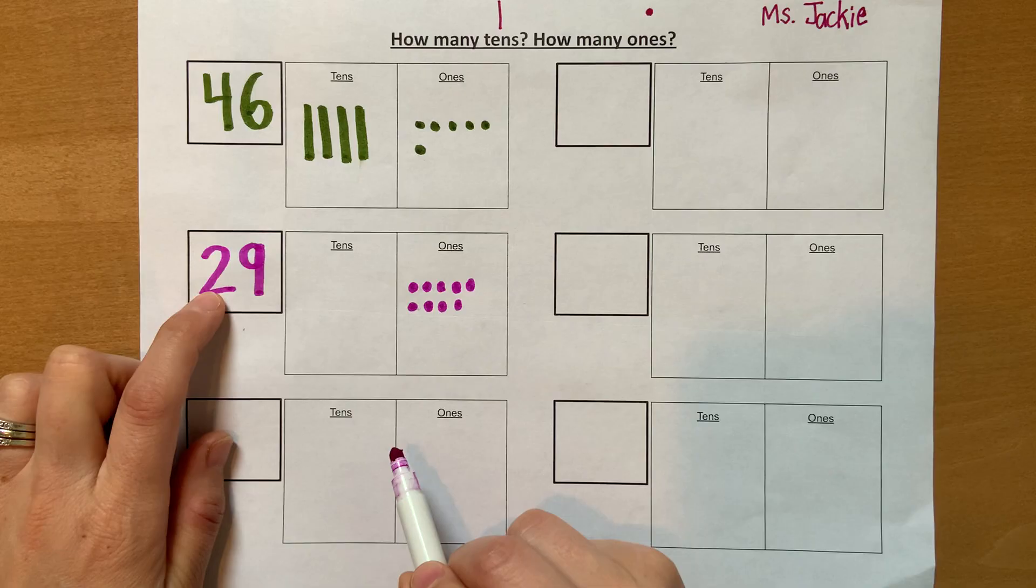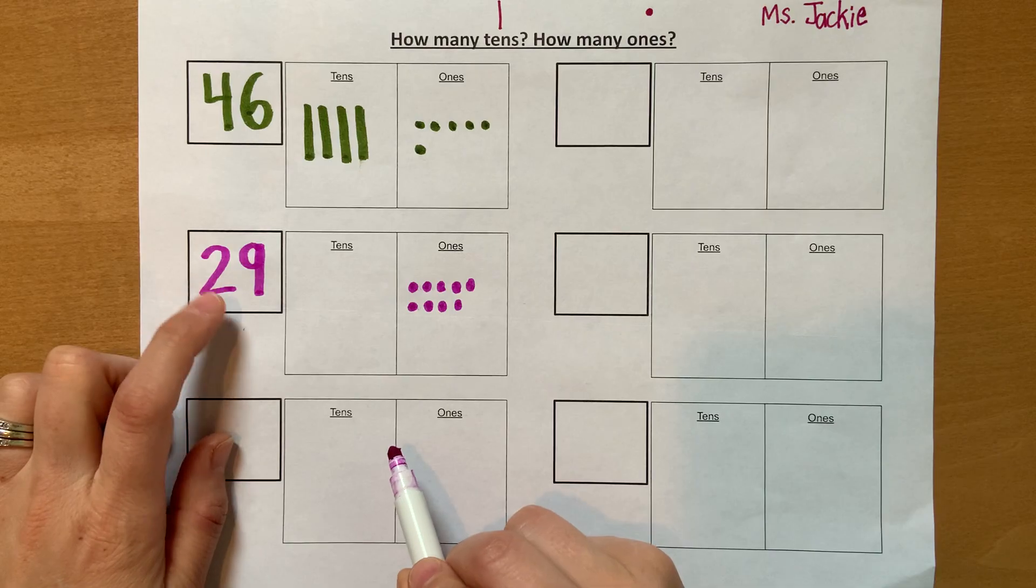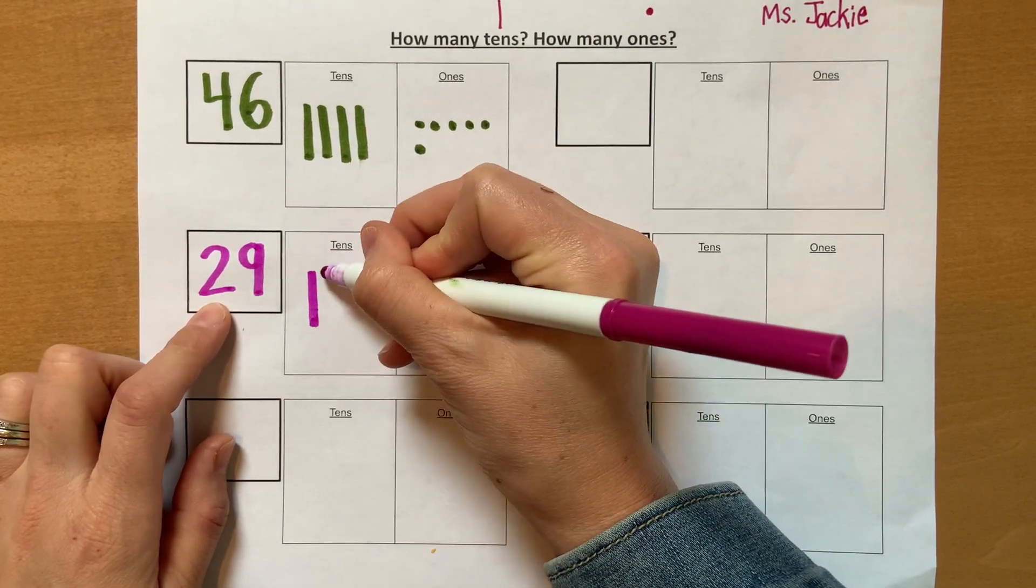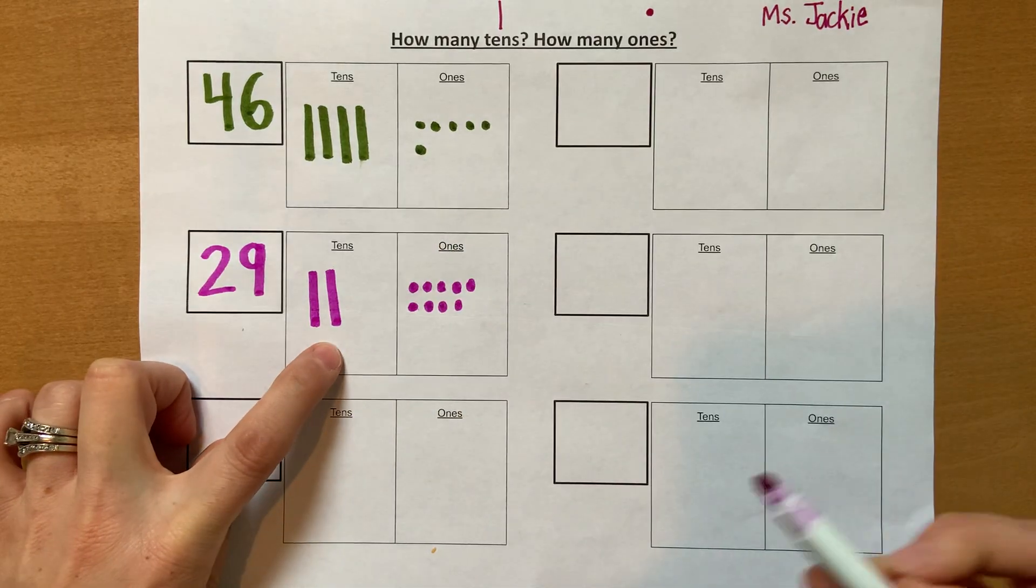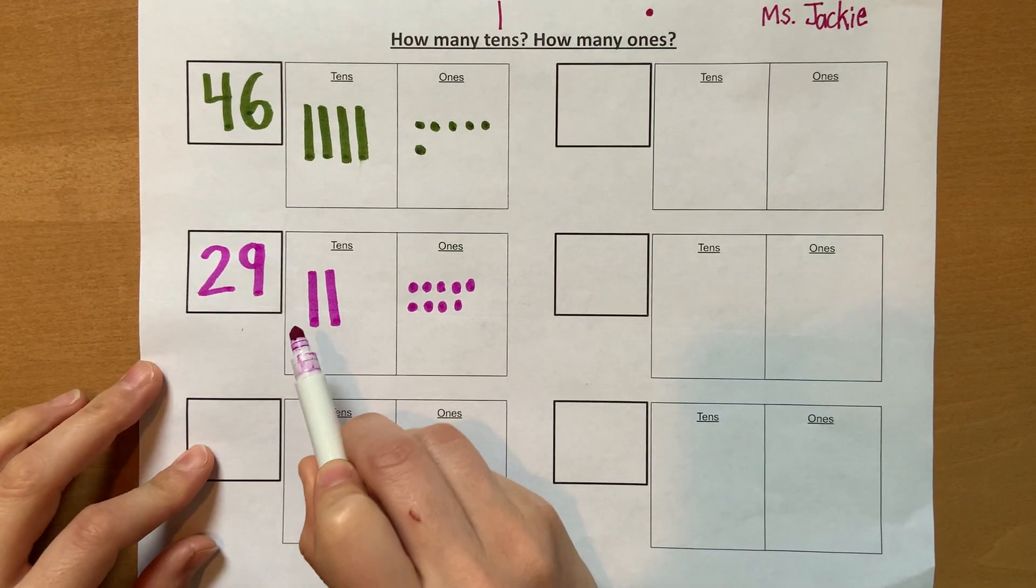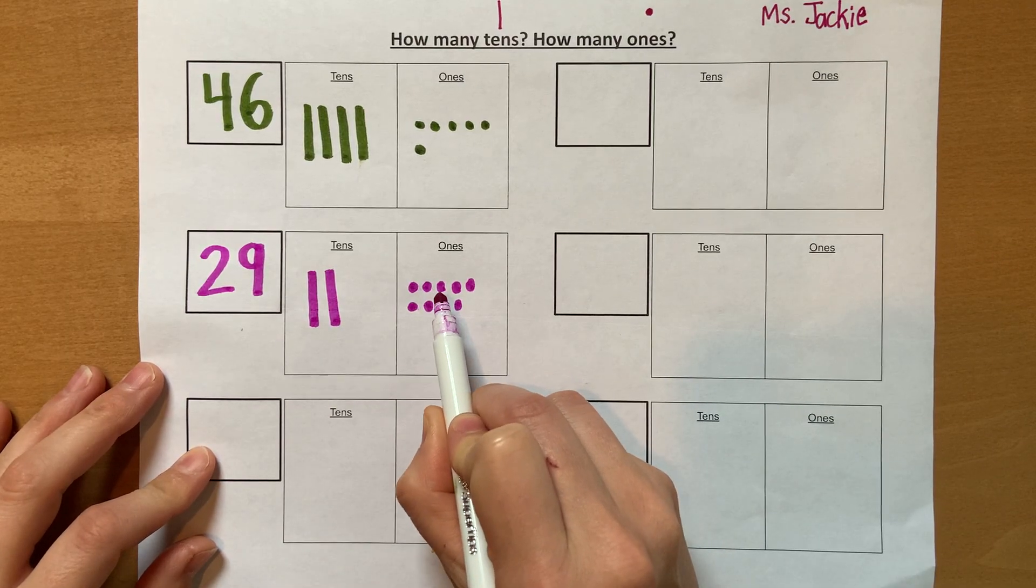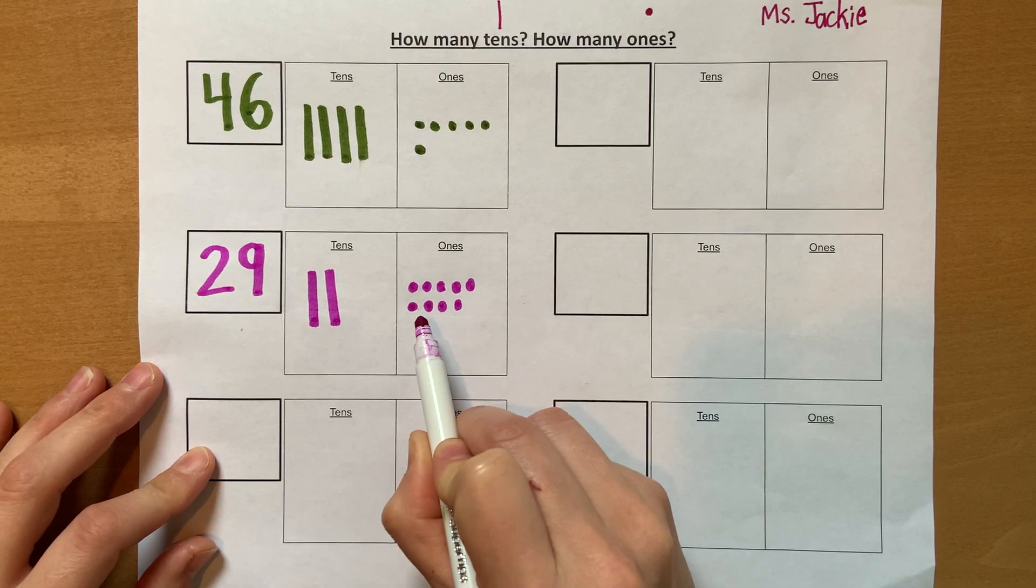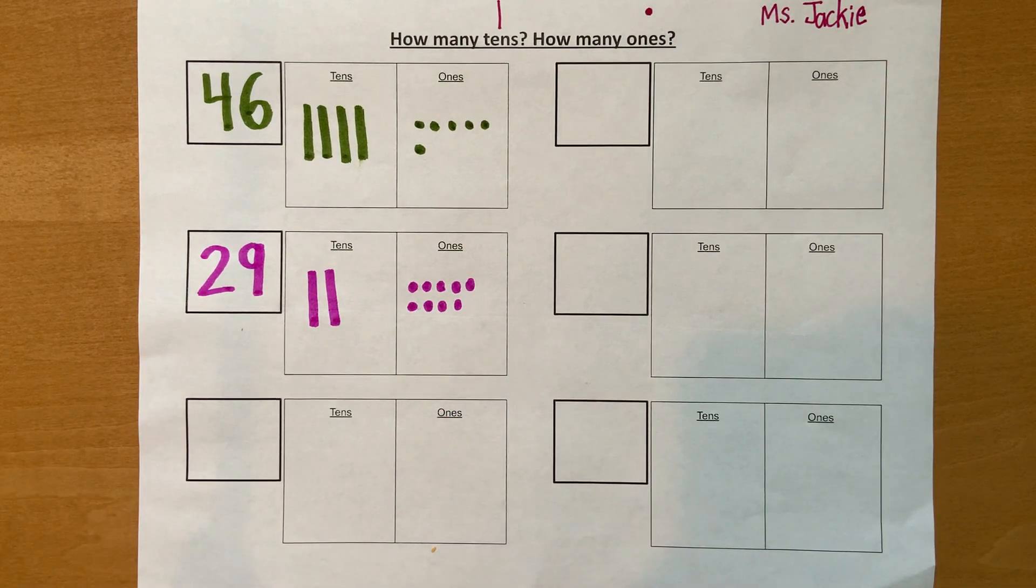But I need to now show you how many tens there are. 10, but it's not just 10, it's 2 tens. So I need 10, 20. I need 2 tens, 2 sticks here. So let's count: 10, 20, 21, 22, 23, 24, 25, 26, 27, 28, 29. Awesome work. You're doing a great job.